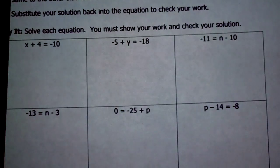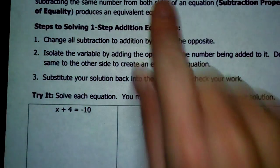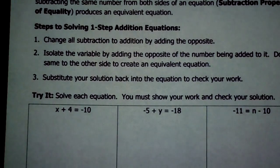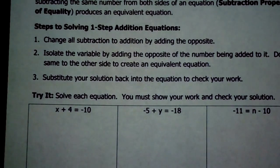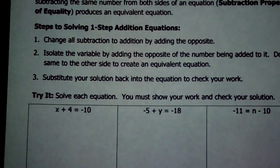Now we'll try these without the blocks. Up here is an explanation of what equivalent equations are — two equations that have the same solution. Equivalent means equal. There are two properties: adding the same number to both sides or subtracting the same number from both sides produce equivalent equations. If you're adding the same number to both sides, it's called the addition property of equality. If you're subtracting the same number from both sides, it's called the subtraction property of equality.